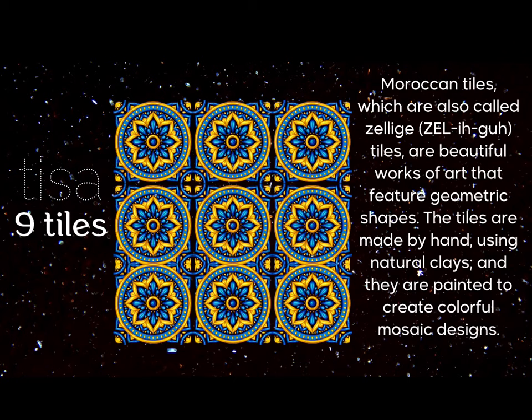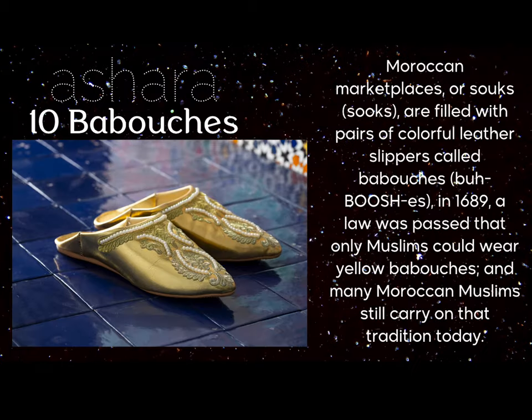Nine — tsa. Nine tiles. Moroccan tiles, which are also called zelige tiles, are beautiful works of art that feature geometric shapes. The tiles are made by hand using natural clays, and they are painted to create colorful mosaic designs.